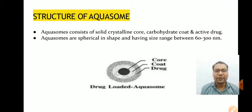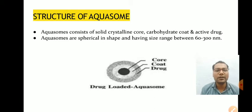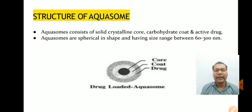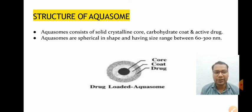Aqueosomes consist of a solid crystalline core, a carbohydrate coat, and an active drug. Talking about their structure, aqueosomes are spherical in shape and have a size range between 60 to 300 nanometers.